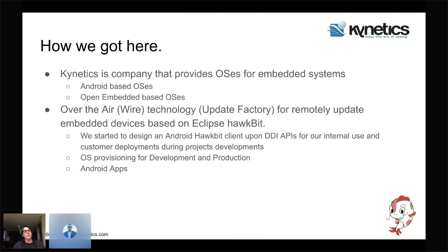We are embedded OS providers, especially in the Android space, and have been using over-the-air technologies for a while to remotely deploy new revisions of our operating system to devices at customer locations. We started designing an Android HawkBit client for internal use. HawkBit is another project under the Eclipse IoT umbrella — it's a server-side technology specialized in over-the-air updates that allows you to distribute update artifacts to embedded devices in the field.